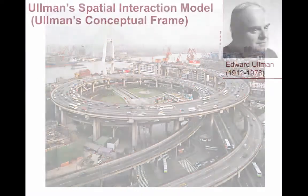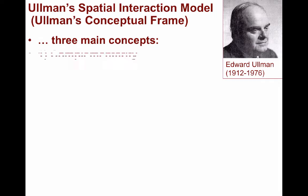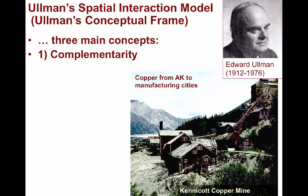Edward Ullman's spatial interaction model, also sometimes called his conceptual frame, consists of three main concepts. The first is complementarity, which occurs when the demands of one region are met by the surplus supplies of another. This causes movement of goods. A workplace such as a factory or office building has a demand for labor, while a residential neighborhood nearby would provide a source of workers.